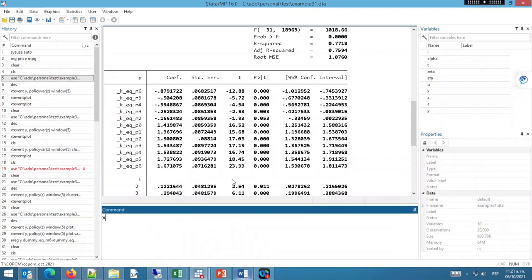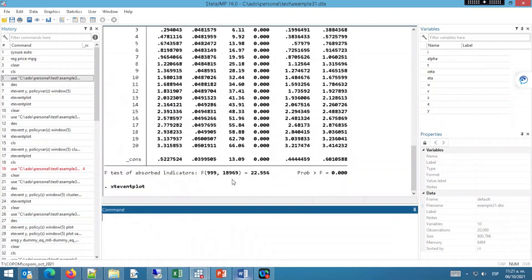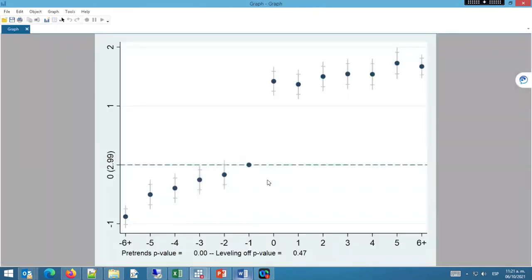Now, to build an event study plot, you can just type xtevent plot after estimating, and this gives you an event study plot. Now, when you see this plot, you may notice that there's a lot of extra components relative to the plot we had seen earlier. This is because we are suggesting additions to the event study plot to make it more informative. On the next video of the series, Simon will tell us about suggestions to improve the event study plot and make it more informative. Thank you for watching, and we hope this video is useful for you in your research.